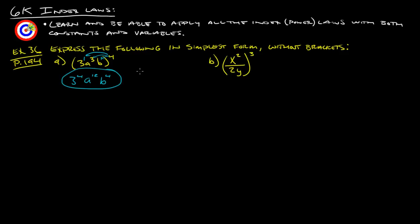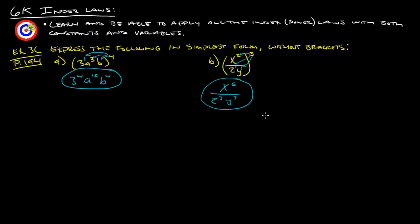For the next bracket: 3 to the 4th, and you can just leave it like that — you don't need to calculate it out. For (x squared over 2y) to the 3rd: x squared becomes x to the 6th, 2 to the 1st becomes 2 cubed, and y to the 1st becomes y cubed, giving x to the 6th over 2 cubed y cubed. You could move those to the numerator and turn them into negative exponents, but since it doesn't specify, you can leave it as a fraction.